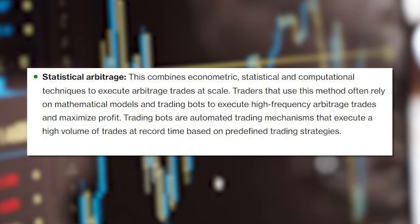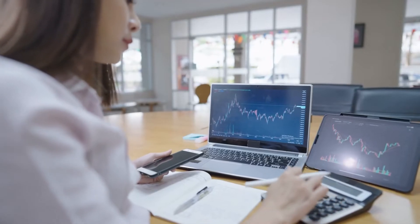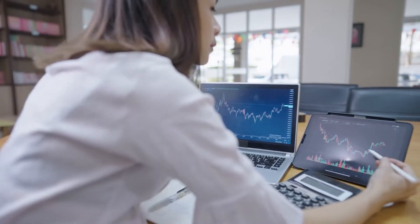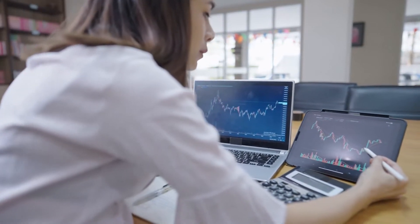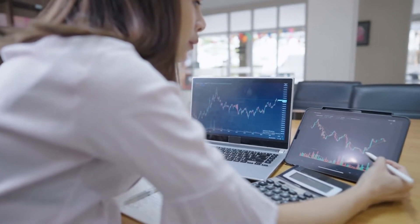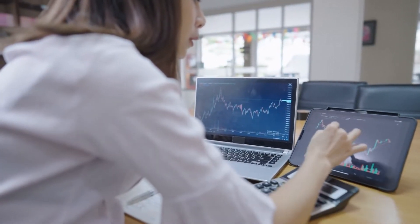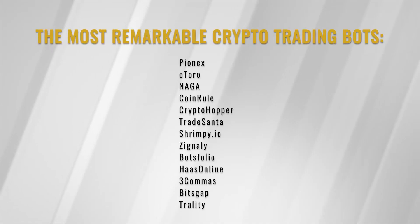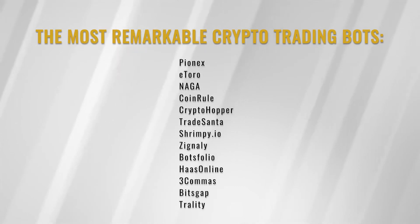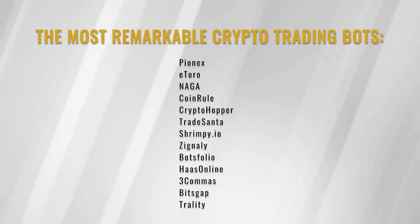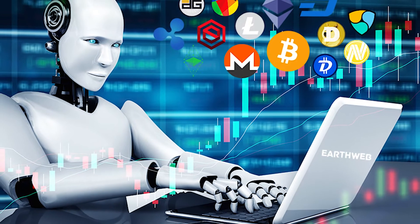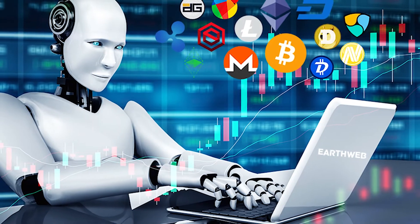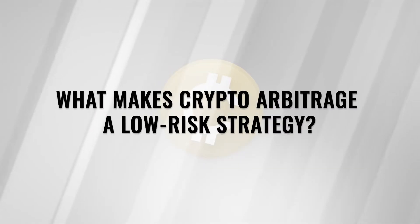Statistical arbitrage uses a combination of econometric, statistical, and computational tools to perform arbitrage trades on a large scale. This strategy is frequently used by traders who rely on mathematical models and trading bots to perform high-frequency arbitrage trades and maximize profit. Trading bots are automated trading processes that perform a large number of deals in a short period of time using established trading strategies.